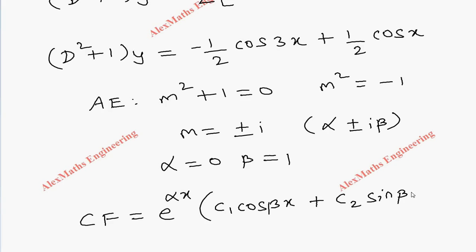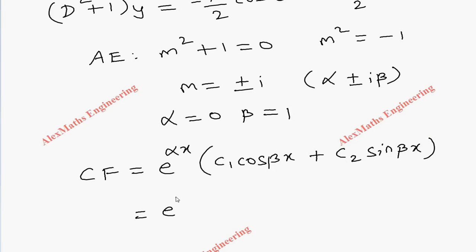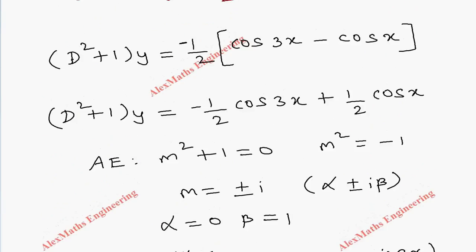So the complementary function is e^(alpha·x) times (c₁ cos(beta·x) + c₂ sin(beta·x)). Substituting alpha = 0 and beta = 1, e^0 = 1, so the complementary function (CF) is simply c₁ cos x + c₂ sin x.